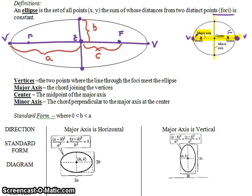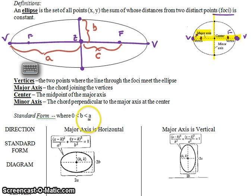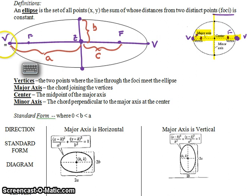If you understand what all of those letters mean, it'll be similar to parabolas where you don't have to memorize everything — you just have to understand what they're saying. We know that B is going to be less than A, and both numbers are bigger than zero. B being less than A just means the minor axis is always smaller than the major axis. As a note, if A equals B, then those two distances are equal and you have a circle.